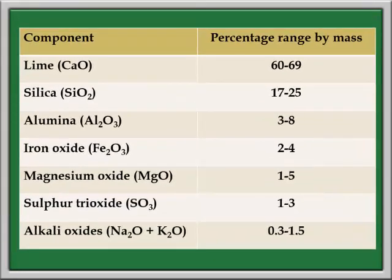This is the percentage range by mass of each constituent present in cement. We can see that lime is the major constituent of the cement, followed by silica, alumina, and others.